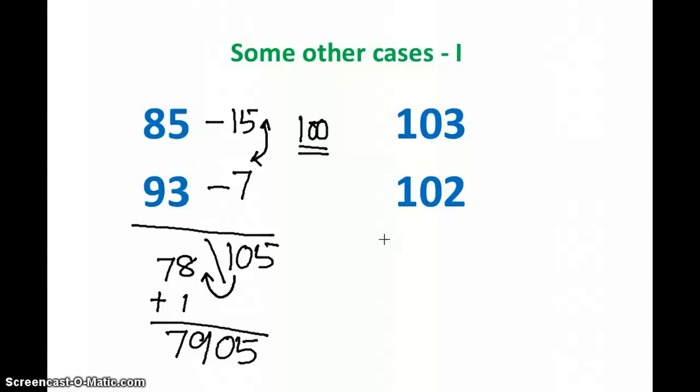Similarly, now let's say multiply 103 and 102. Here, 103 I can write plus 3, and 102 I can write plus 2. So 3 into 2 is 6. 103 plus 2 is 105, or 102 plus 3 is also 105. So is the answer 1056? Of course it is not, because on the right side, since the base is 100, we have to keep two numbers. But we got only one number after multiplying 3 into 2, so we should put a 0 before this. That's all. The answer is 10506.